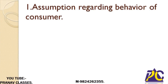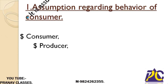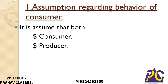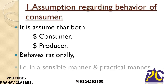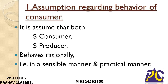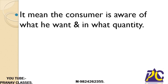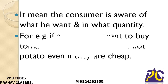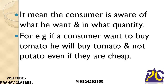The first topic is assumptions regarding behavior of the consumer. It is assumed that both consumer and producer will behave in a rational manner — that is, in a sensible and practical manner. This means the consumer is aware of what he wants and in what quantity. For example, if a consumer wants to buy tomato, he will buy tomato and not potato, even if potato is cheap.